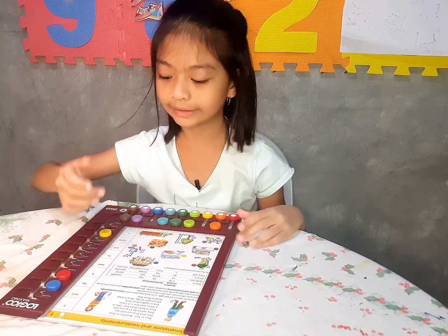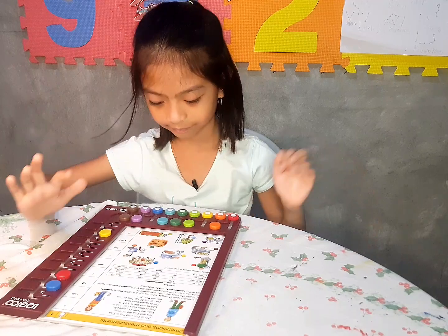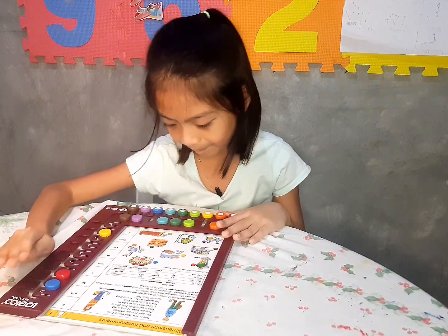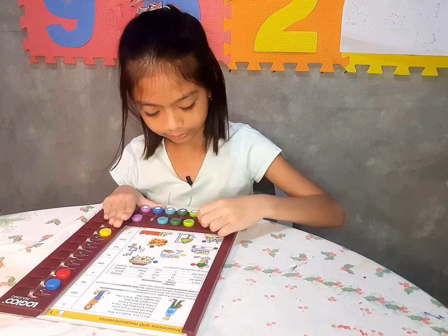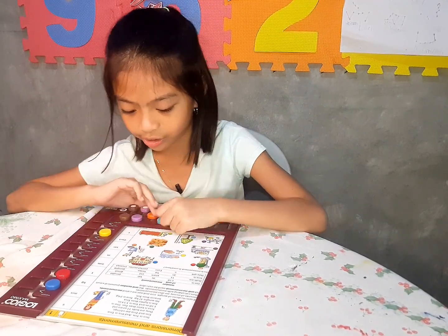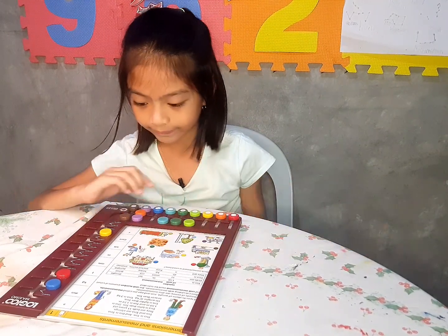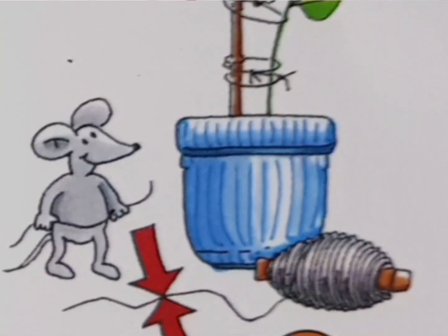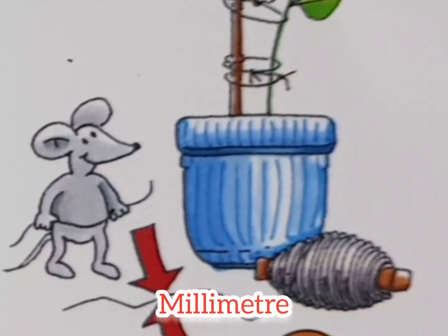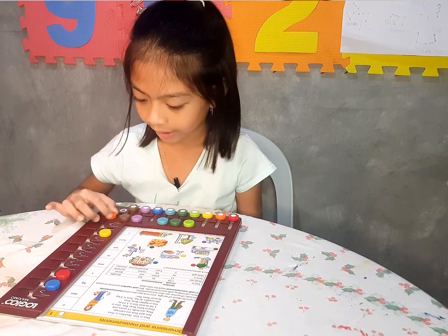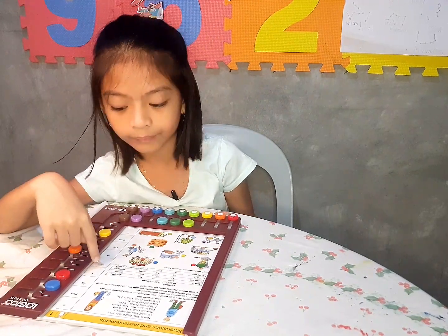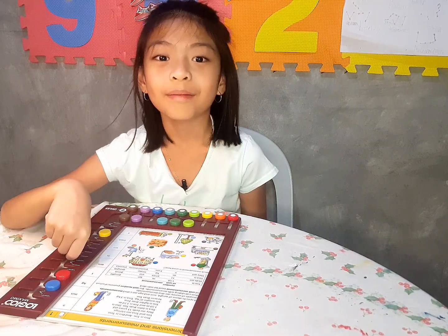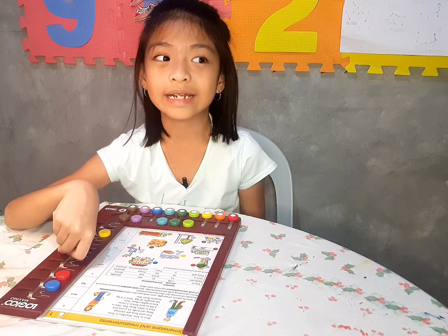Kg is kilograms and cents. Next one is orange. I think it's mm. MM means milliliters.